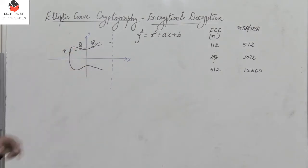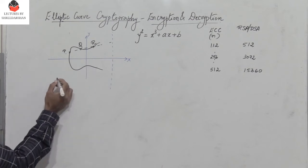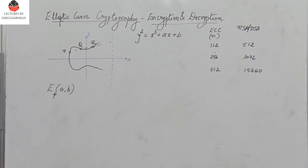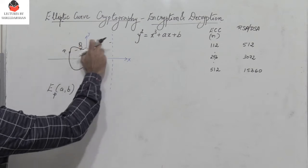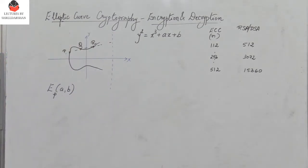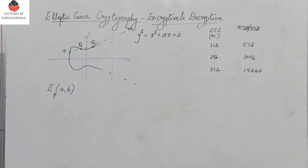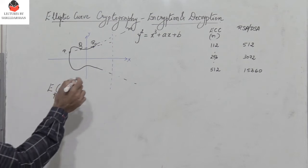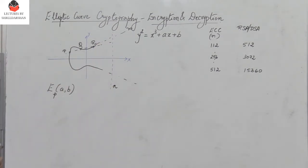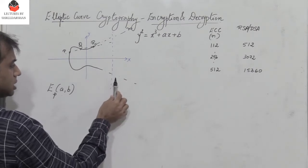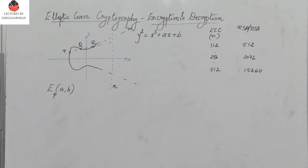Consider an elliptic curve E(a, b) operating in a modulus p, where p is a prime number. On this elliptic curve we consider two points P and Q. If we join these two points and extend the line, it intersects at another point R on the elliptic curve. The elliptic curve extends up to infinity, but we limit it to a predefined value n.